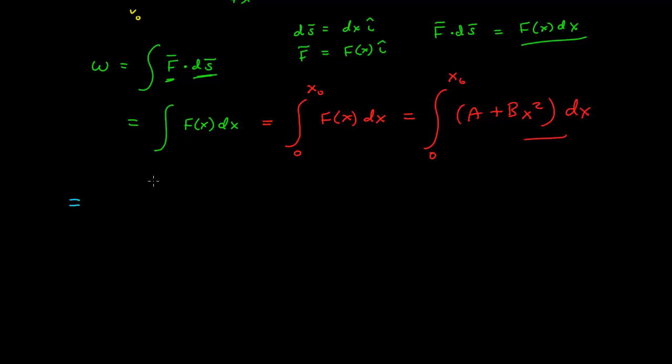And so the indefinite integral, Ax plus one-third Bx cubed, evaluated from 0 to x naught, is straightforward, A x naught plus one-third B x naught cubed. This is the total, or net, work done on the particle.